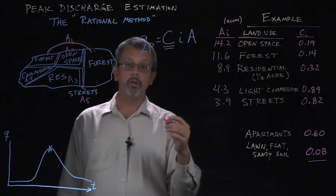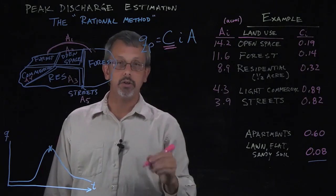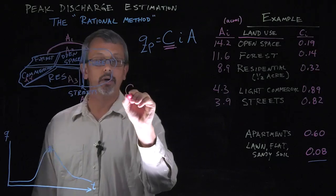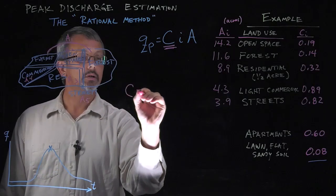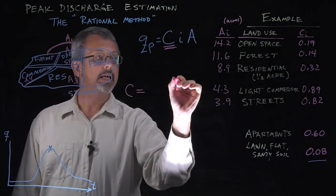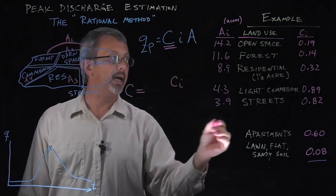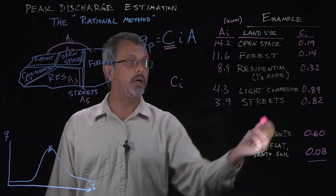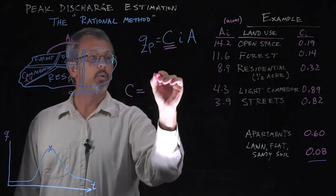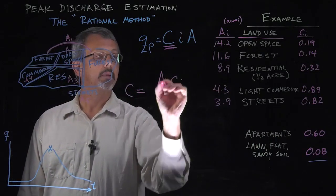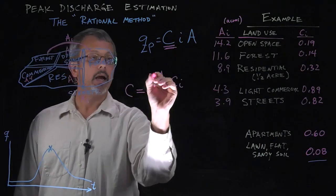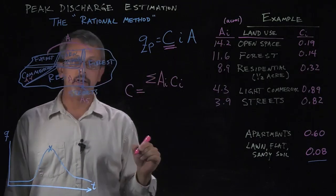Well, what we're going to do to define the C that we're going to use here, this coefficient, is we're going to create a weighted average. We're going to take each coefficient i, the list of coefficients that corresponds with each type. We're going to multiply it by the area that's associated with it. And then we're going to sum all of those values.